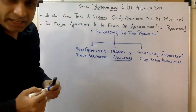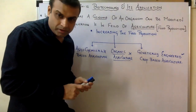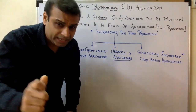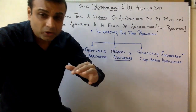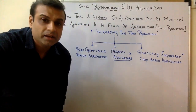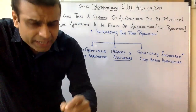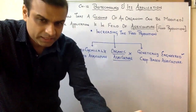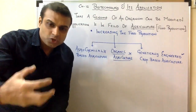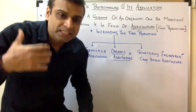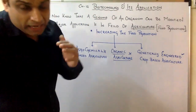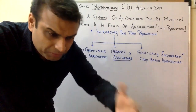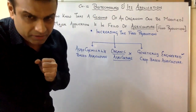Genetically engineered crop-based agriculture means we will modify the genetic makeup of a particular crop so that its production improves. Food prices are always high because the population is growing but food production is not keeping pace. So our scientists need to develop crops that can produce more yield in less time.